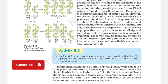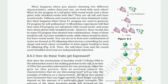Work out which trait would be considered dominant and which one recessive in Figure 8.4. What happens when pea plants showing two different characteristics, rather than just one, are bred with each other? What do the progeny of a tall plant with round seeds and a short plant with wrinkled seeds look like? They are all tall and have round seeds — tallness and round seeds are thus dominant traits. But when these F1 progeny are used to generate F2 progeny by self-pollination, some F2 progeny are tall with round seeds, and some are short with wrinkled seeds. However, there would also be some F2 progeny that showed new combinations: some tall with wrinkled seeds, and others short with round seeds. You can see how new combinations of traits form in F2 offspring when factors controlling seed shape and seed color recombine to form zygotes — Figure 8.5. Thus, the tall/short trait and the round-seed/wrinkled-seed trait are independently inherited.